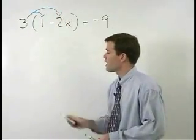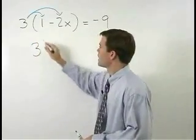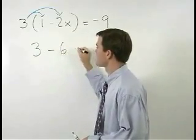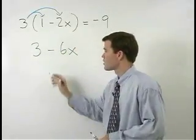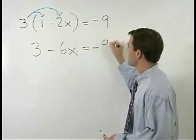When we do that we get 3 times 1 which is 3 and 3 times negative 2x which is negative 6x. So we have 3 minus 6x equals negative 9.